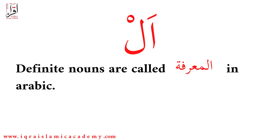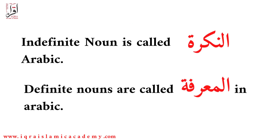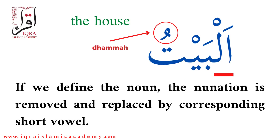Definite nouns are called 'ma'arifa' in Arabic, and indefinite nouns are called 'an-nakira'. Ma'arifa means definite nouns. Al is added to the start of the noun to indicate that the noun we are talking about is definite.